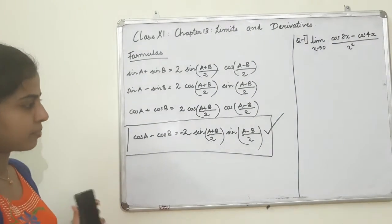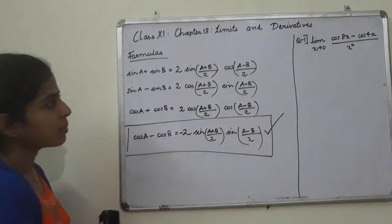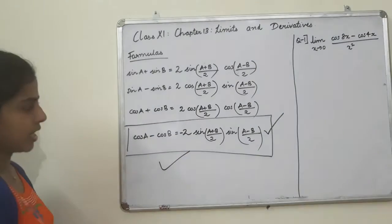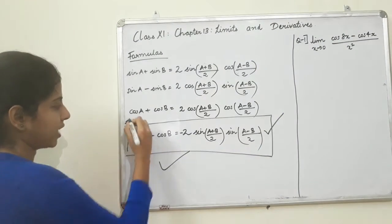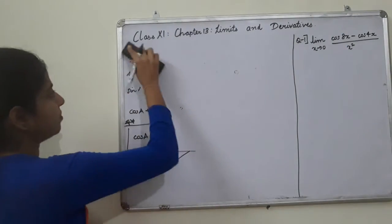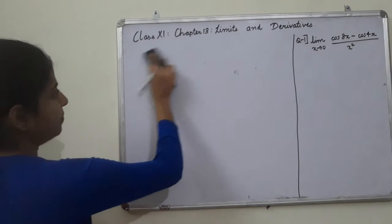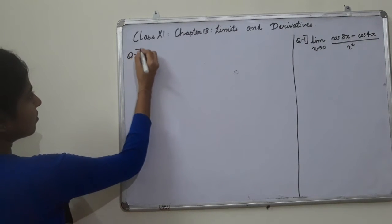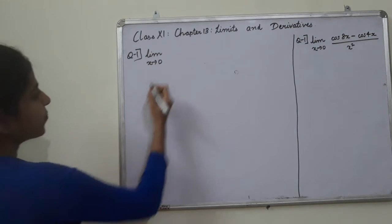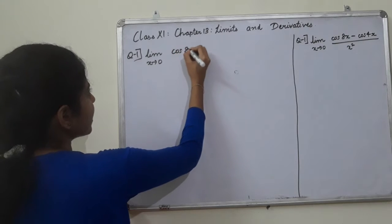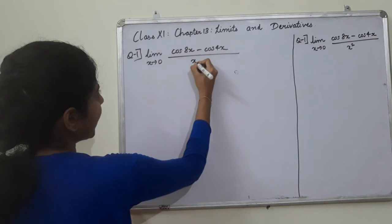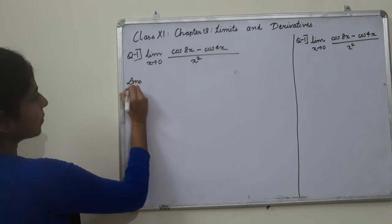The problem is that we have to solve the problem. Question 1: limit as x tends to 0, of cos(8x) minus cos(4x), whole divided by x squared. We have to solve this problem.